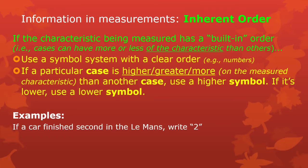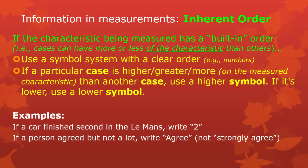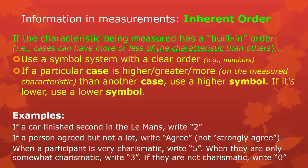For example, if a car finished second place in Le Mans, you write two instead of three for third place or one for first. It's a reversed ordered thing since a higher number means finishing later, but it's really easy to reverse scales and you have to watch out for that. If a person agreed with a survey item but not a whole lot, you might write 'agree,' whereas if they agreed a lot, you write 'strongly agree.' You might rate how charismatic a person is by writing five — the highest point — a three for somewhat charismatic, and zero if they have zero charisma.